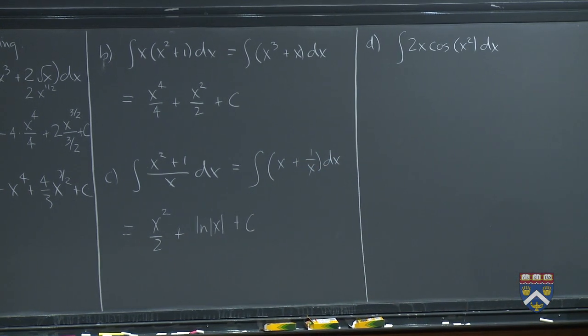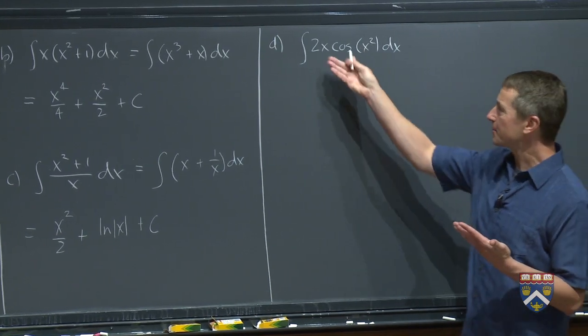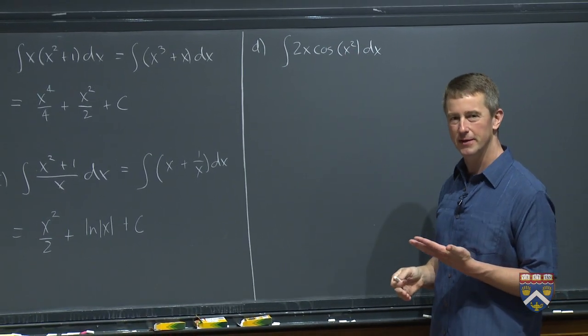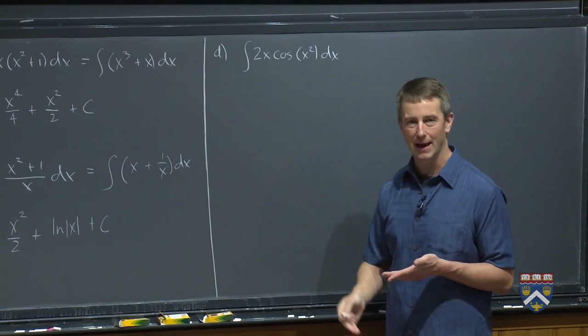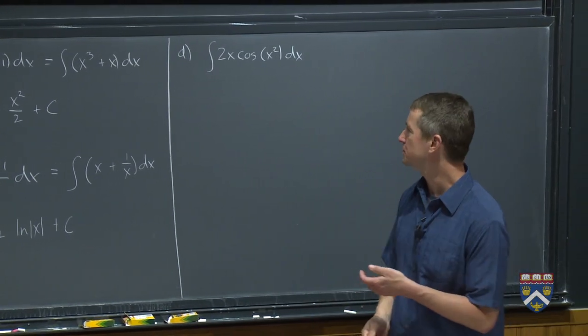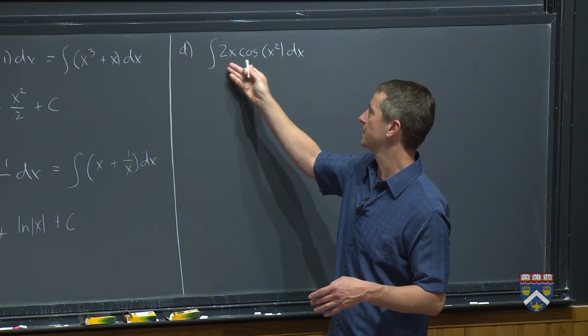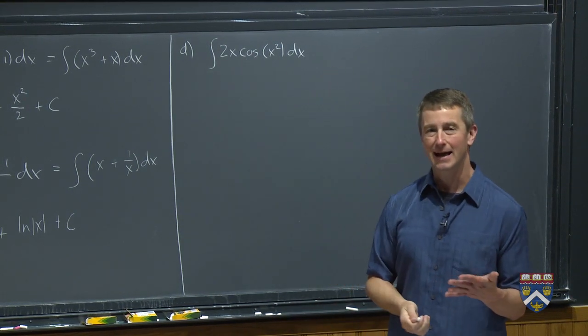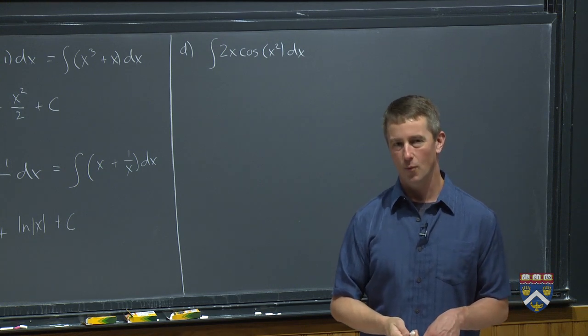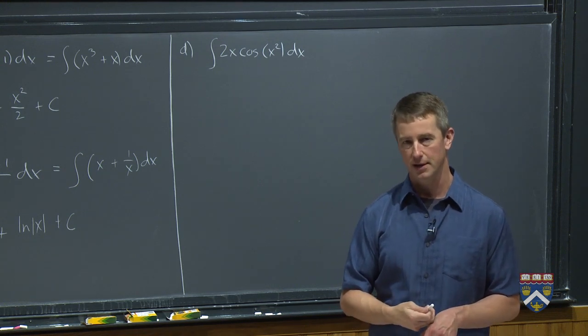Let's try one more. So here there's really no, we've got a product of functions again, but there's really no way to do the sort of multiplying out that we did there because they're two different families of functions, a linear function and then a cosine.